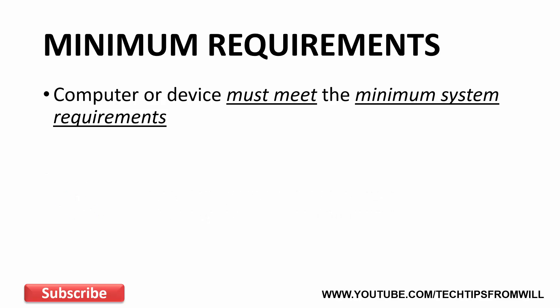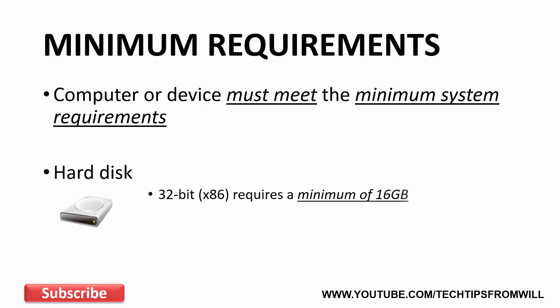The next requirement to discuss is the hard disk space. 32-bit installs of Windows 10 require a minimum of 16 GB of free hard disk space. However, if you plan on installing the 64-bit version, you should up this to 20 GB of hard disk space.